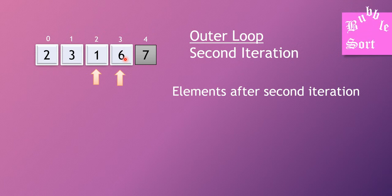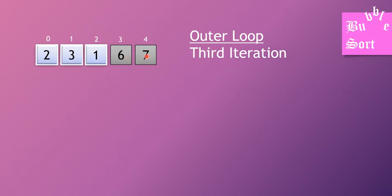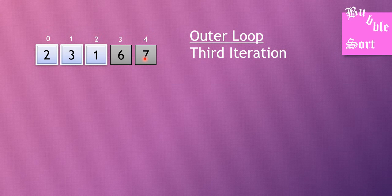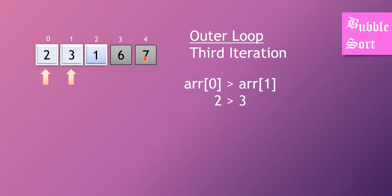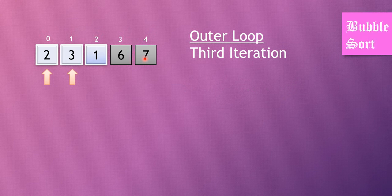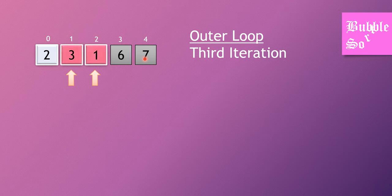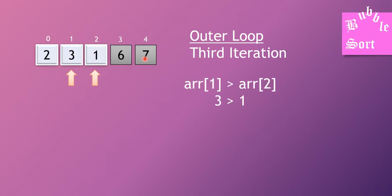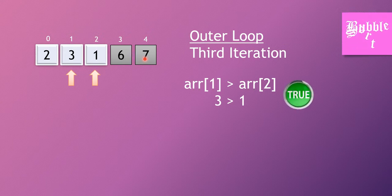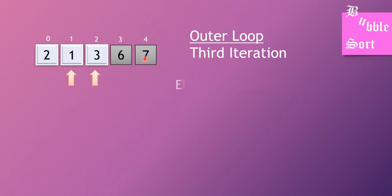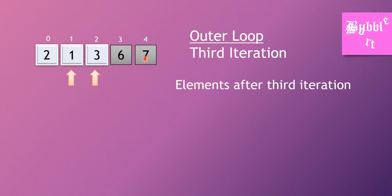In the third iteration, the last two elements — six and seven — have been disabled as they are the two largest. We start with the first two elements: ARR of zero and ARR of one — two and three. Two is greater than three is false, so no swap. Moving to ARR of one and ARR of two — three and one — three is greater than one, so the condition is true and we swap. After the third iteration, the third largest element has moved to the third-from-last position.